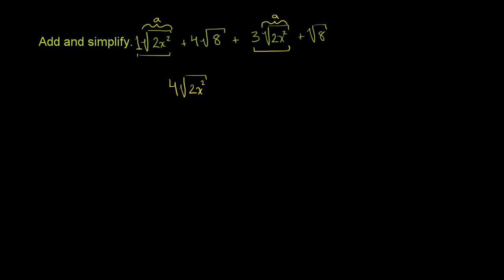Then we want to think about: we have four principal roots of 8 and we have one more principal root of 8. Same idea — you have four of these things I'm circling in magenta and then one more of these things I'm circling in magenta. That one coefficient is implicit. So if I have four of something plus one more of something, it becomes five of that something: plus 5 times the square root of 8.